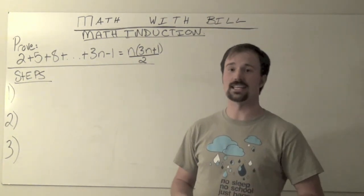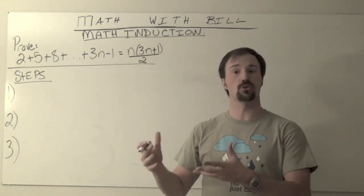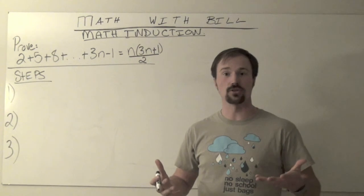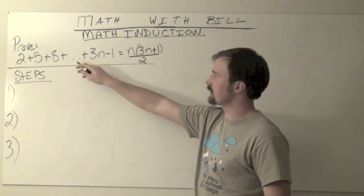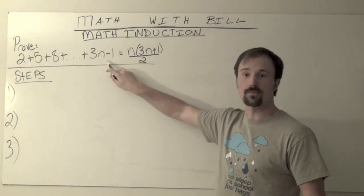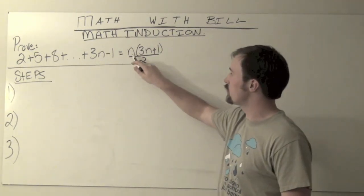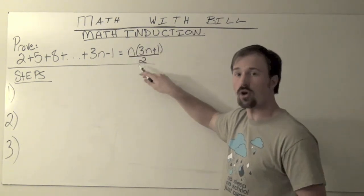So in this video we are looking at mathematical induction, which is the process of proving patterns actually work. Today we're proving the pattern 2 plus 5 plus 8 plus so on and so forth. It's really this 3n minus 1 pattern that the sum of this pattern is actually equal to n times 3n plus 1 all divided by 2.